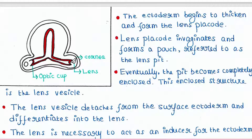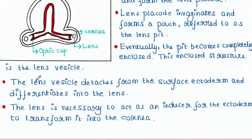Here is the lens vesicle. The lens vesicle detaches from the surface ectoderm and differentiates into the lens. The lens is necessary to act as an inducer for the ectoderm to transform it into the cornea. So from the ectoderm, the cornea will be formed, and for that the lens acts as an inducer.